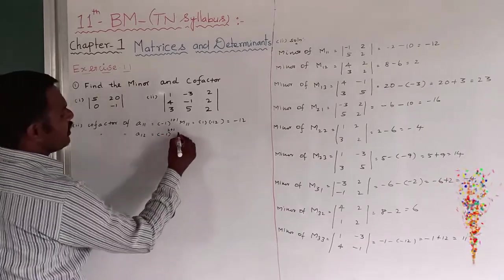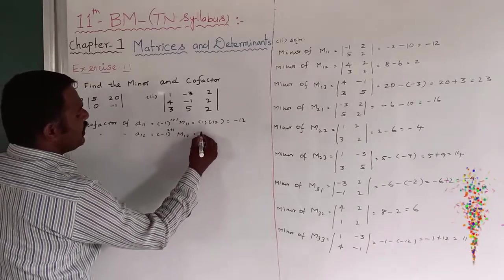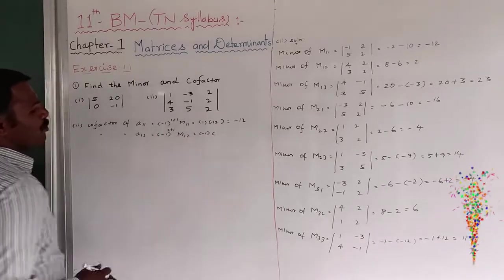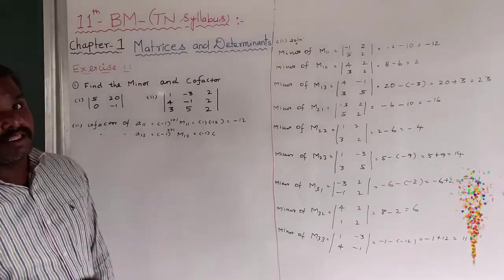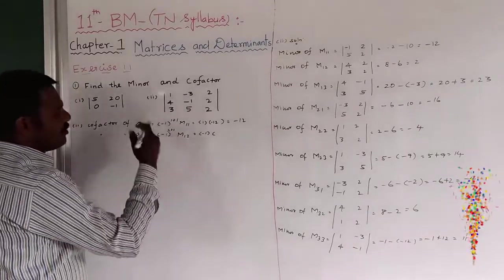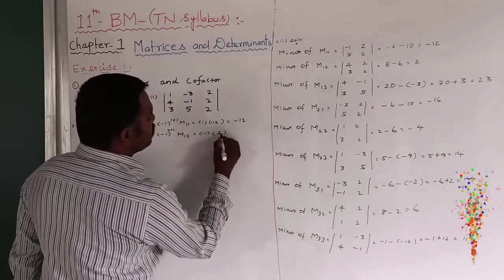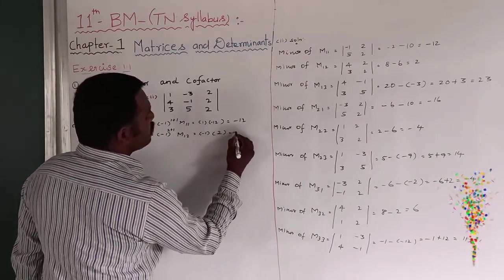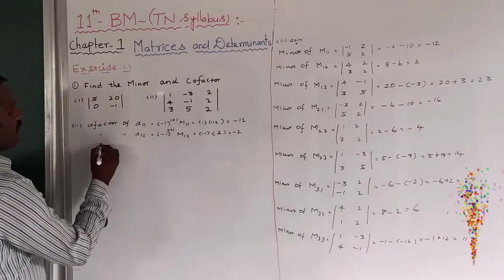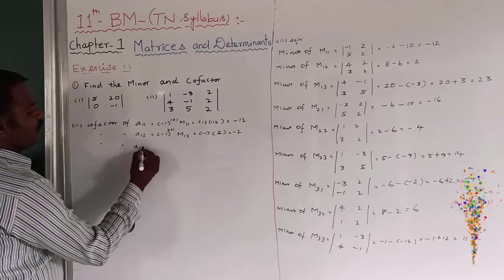The cofactor of a12 is minus 1 to the power 1 plus 2, times M12. That is minus 1 to the power 3, which is minus 1. Because an odd power means minus 1. M12 is equal to 2. So therefore minus 1 into 2 equals minus 2.